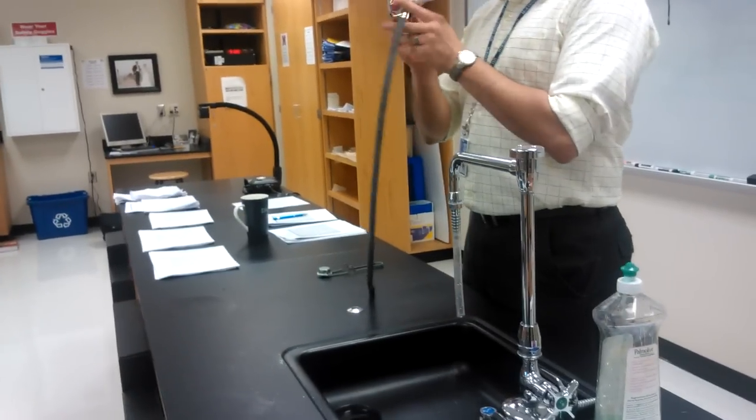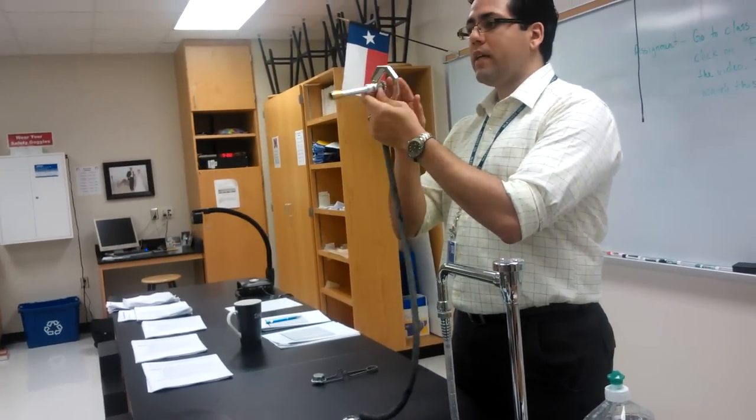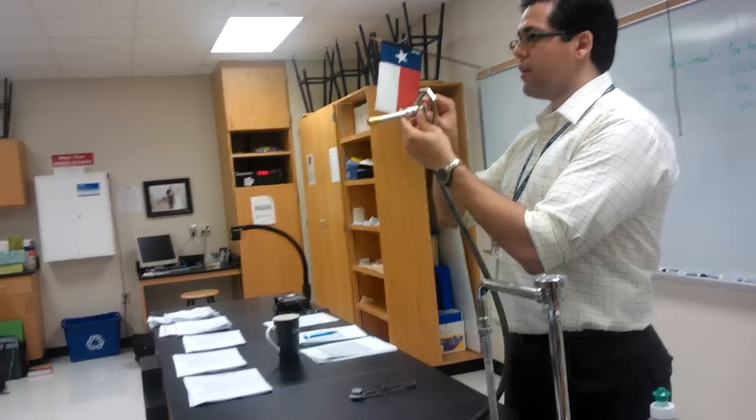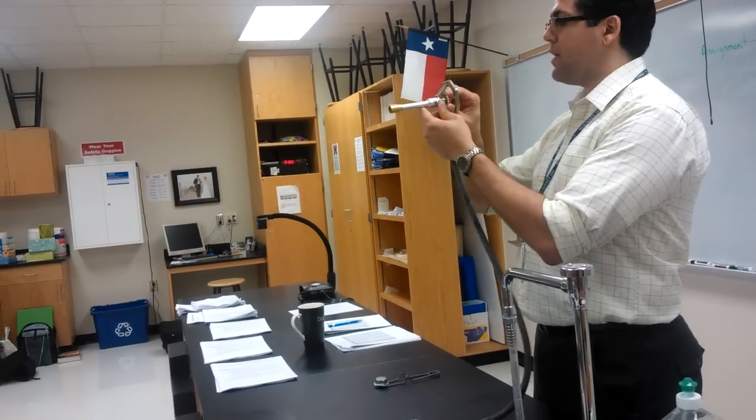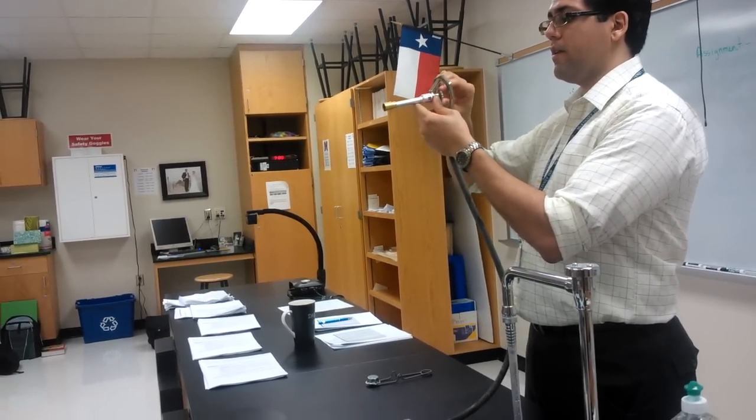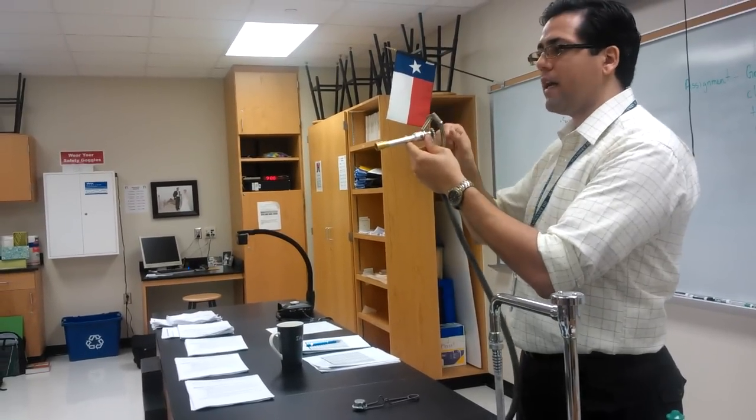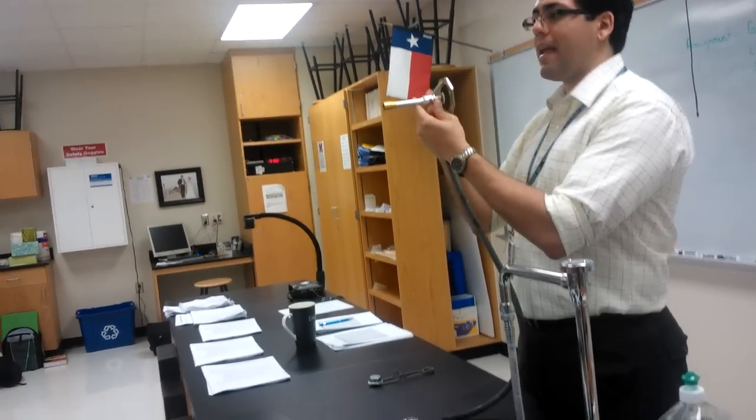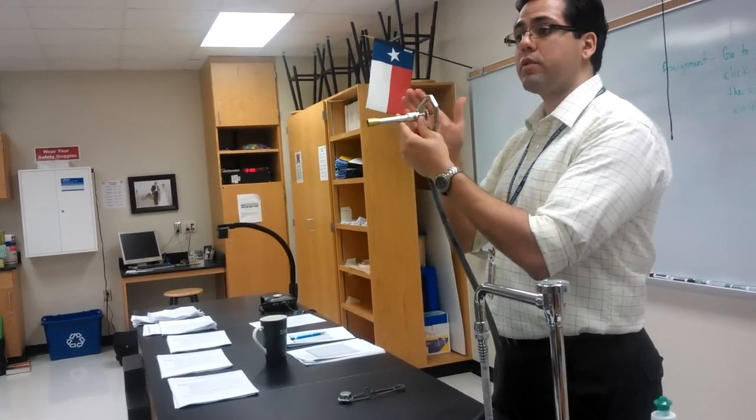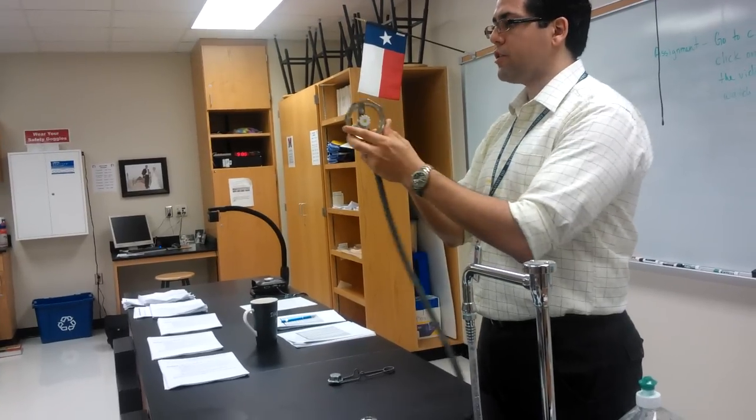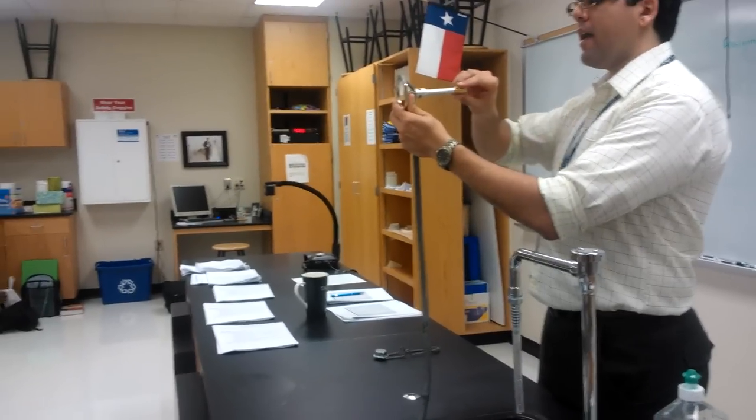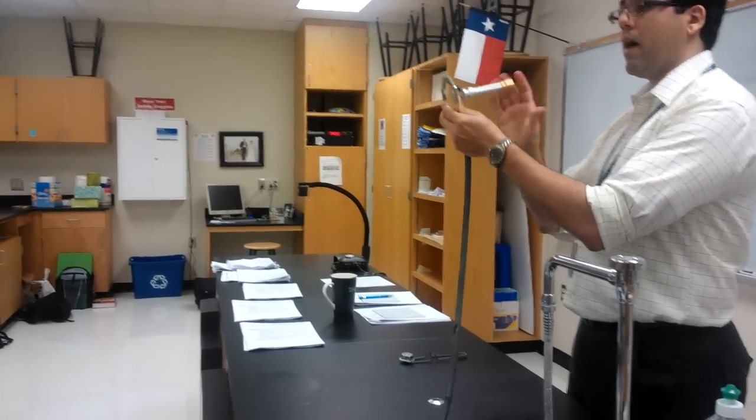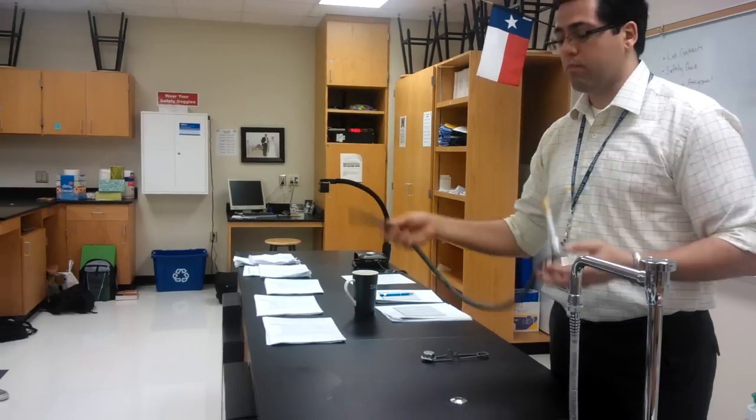Next, take your Bunsen burner. Point it at you, the bottom. You see the knob down here - turn it clockwise to make sure it's shut, just until you feel it hit. That's going to close the gas. I always want to start with a closed Bunsen burner. Then turn it around so the barrel is facing me and also turn it clockwise until it hits. Now I'm ready to connect my Bunsen burner.